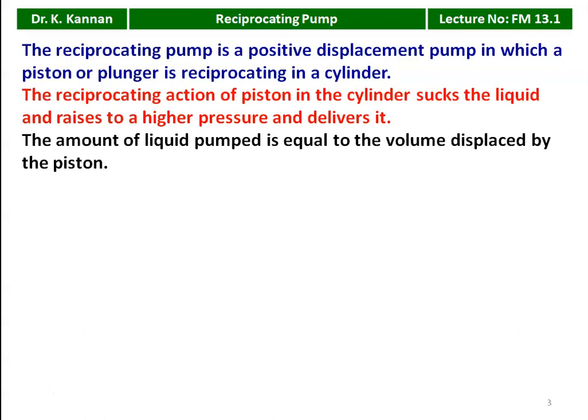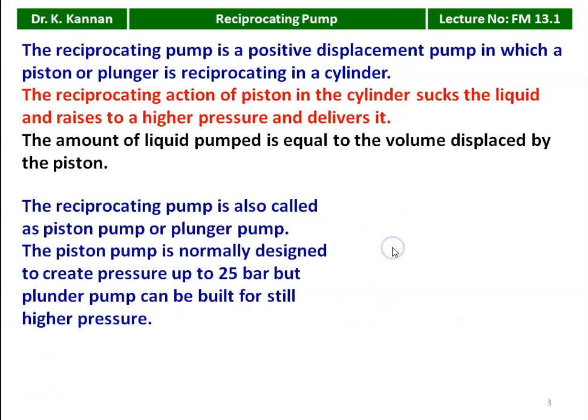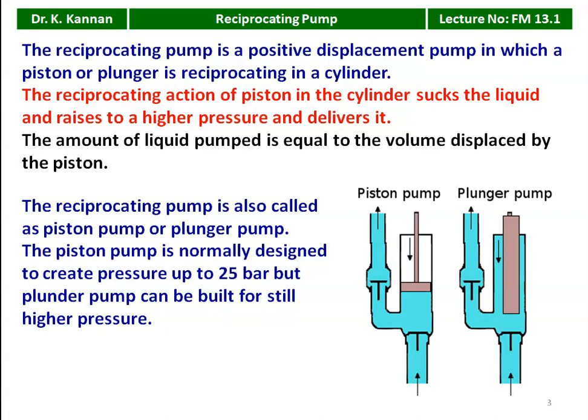The reciprocating action of the piston in the cylinder sucks the liquid, raises it to higher pressure, and delivers it — similar to an internal combustion engine where the piston reciprocates inside the cylinder. There will be a suction stroke and a delivery stroke. During the suction stroke, the liquid is drawn into the cylinder; during the delivery stroke, the piston pushes the liquid at higher pressure and delivers it. The amount of liquid pumped equals the volume displaced by the piston. The reciprocating pump is also called a piston pump or plunger pump. The piston pump is designed for pressures up to 25 bar, but the plunger pump can be built for still higher pressure.